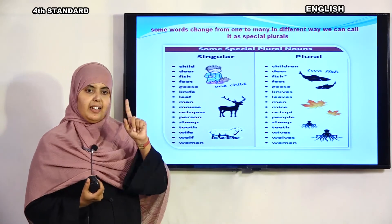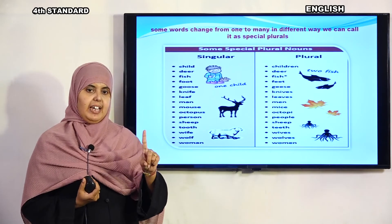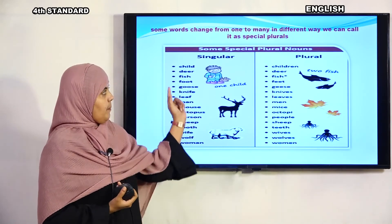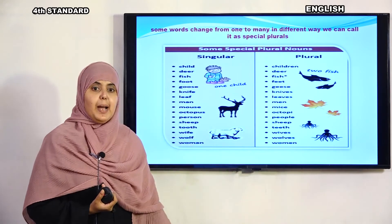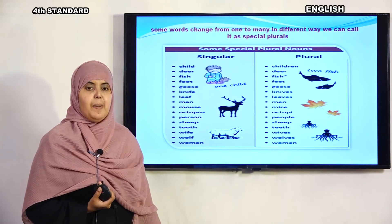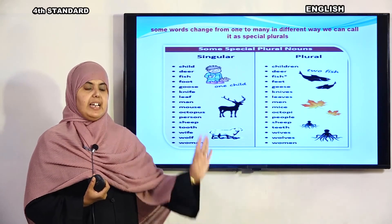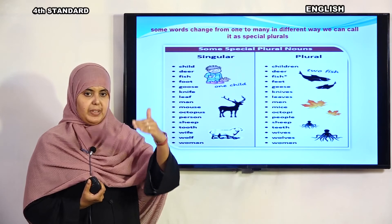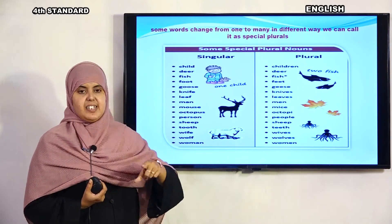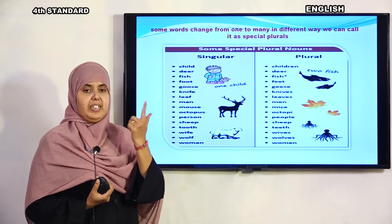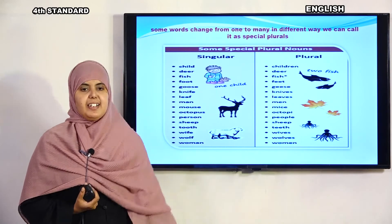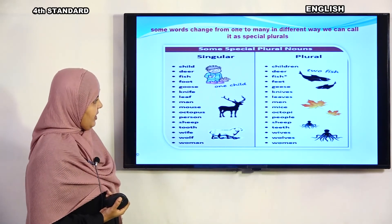Man — men. One man (admi) is singular. More than one man is called men — M, E, N. Mouse — mice. One mouse (chuha) is singular. The plural of mouse is mice — M, I, C, E. We don't add 's'; it becomes a different word.